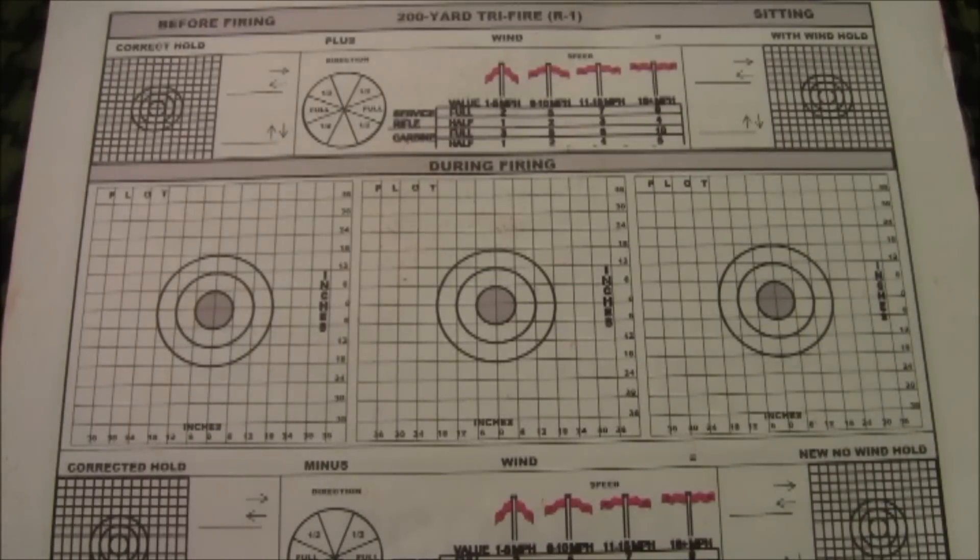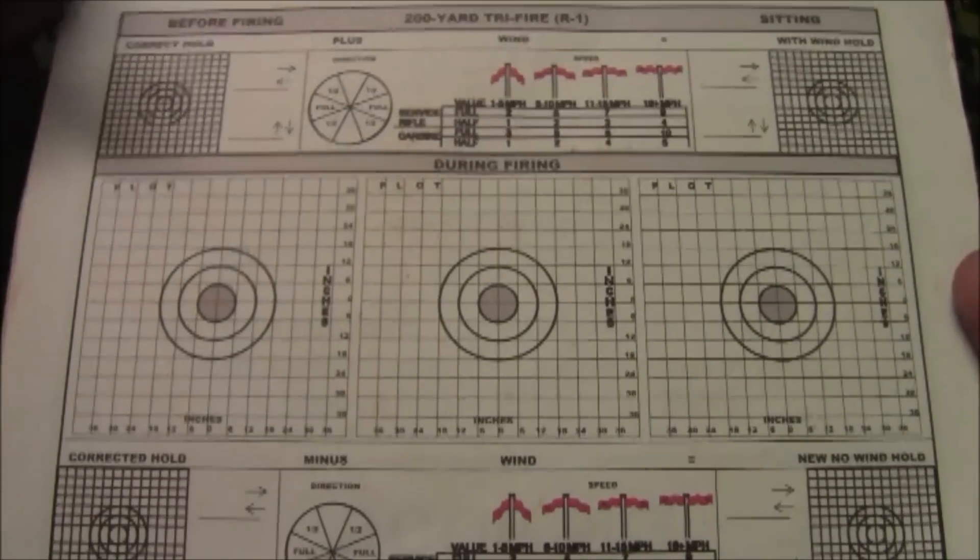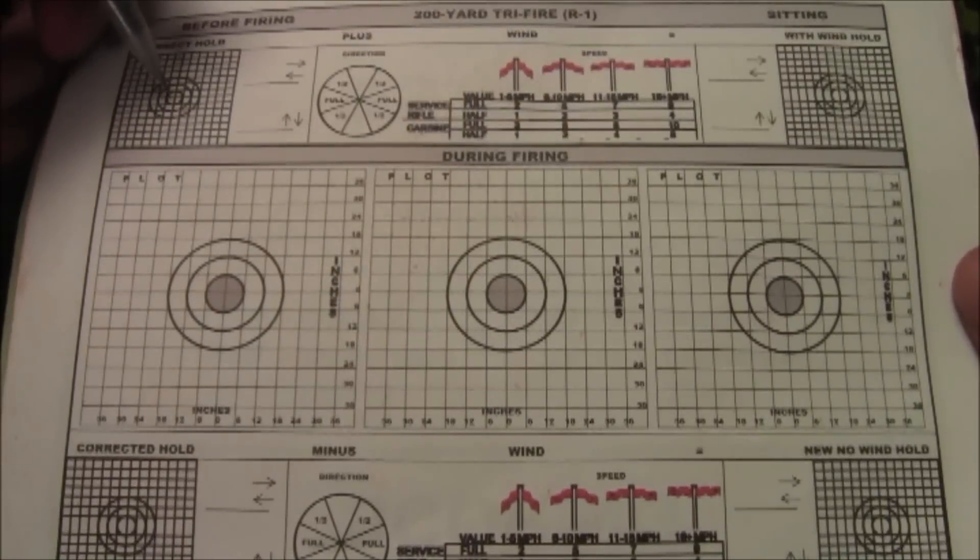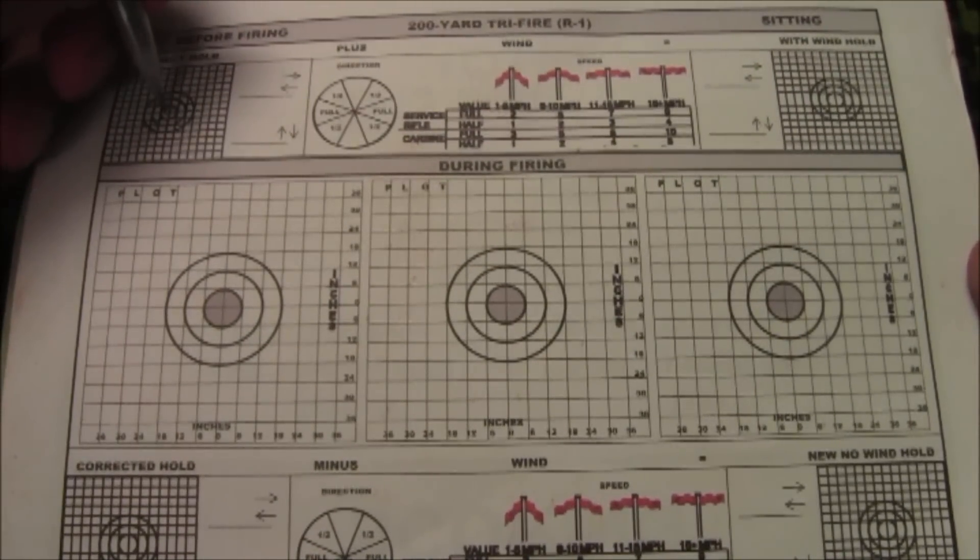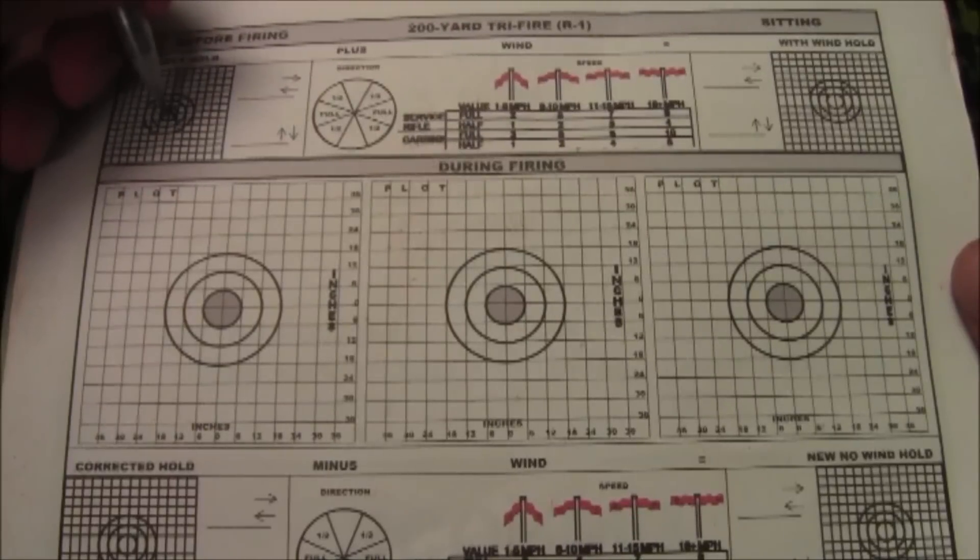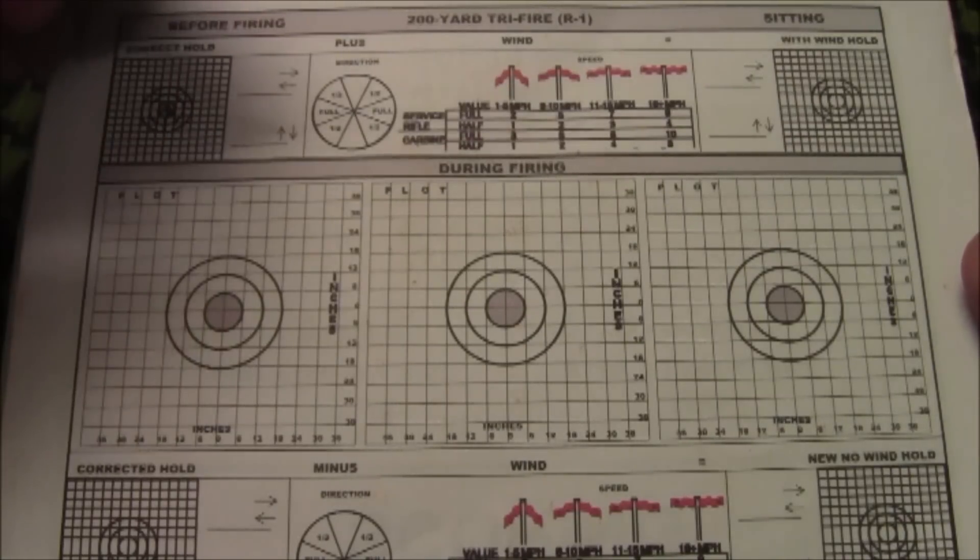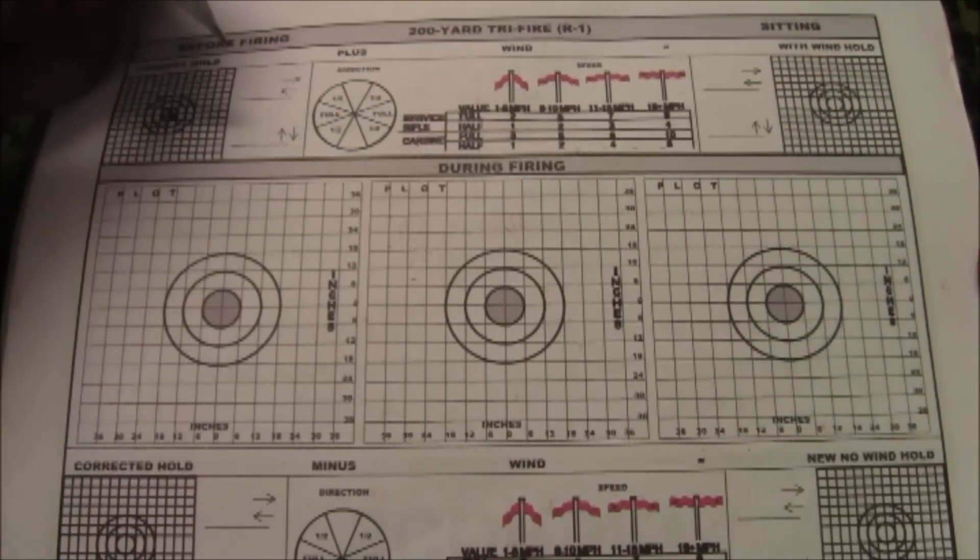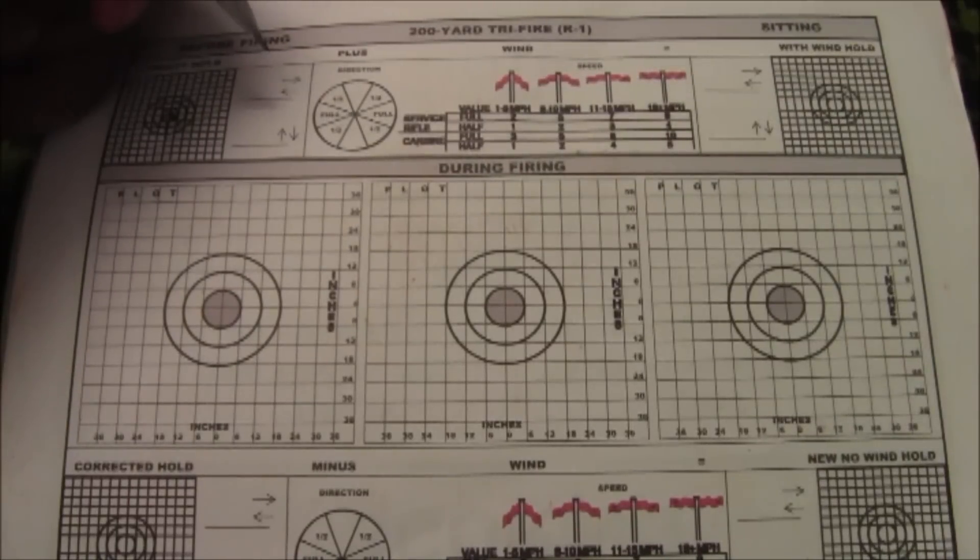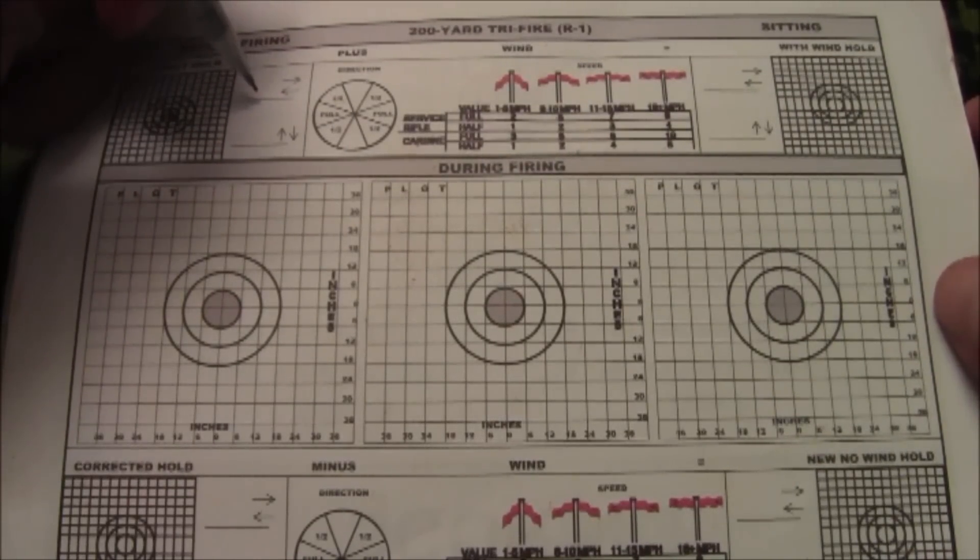I just want to show you some things I go through when using the data book. So here you have a spot for your correct hold, now that's your hold without wind, and if we're using an ACOG I would draw the chevron here right where I would use it to hit center mass on the target 200 yards. These spots were really meant for iron sights and people don't use iron sights anymore, we qualify with the ACOG now, so it's not that important.